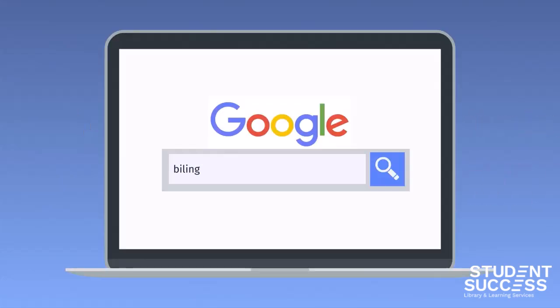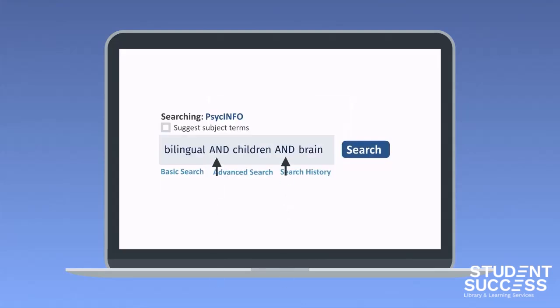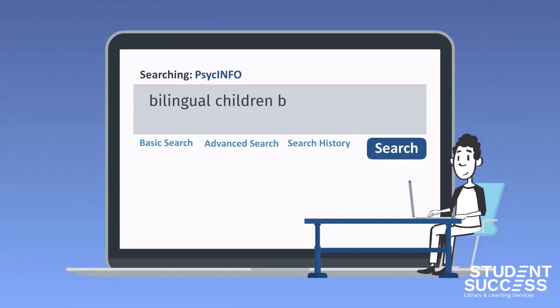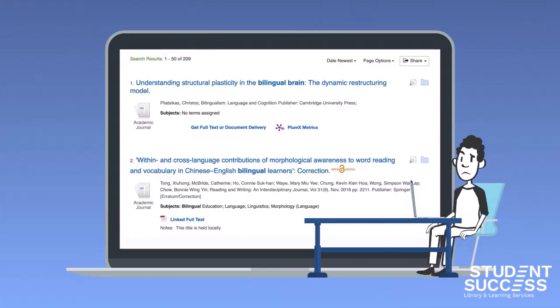Now we're ready to put those words together. Unlike Google, which places an invisible AND between all your keywords, in many library databases you must add the word AND between your keywords. So we need to change bilingual, children, brain to bilingual AND children AND brain. So we're done, right? Not so fast.